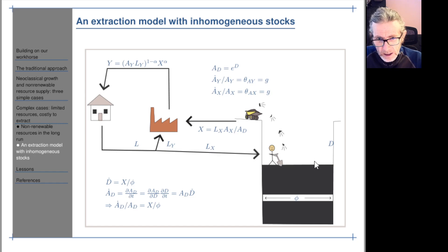So that's the setup. We need to do a bit of math. What's going on over here? We've got D dot is X over Phi. Phi is, here it's 2D, so it's the width. Effectively, it's the surface area of this tube or source. So D dot, the rate of increase of the depth, is the rate of extraction divided by the surface area. That's just like physics.